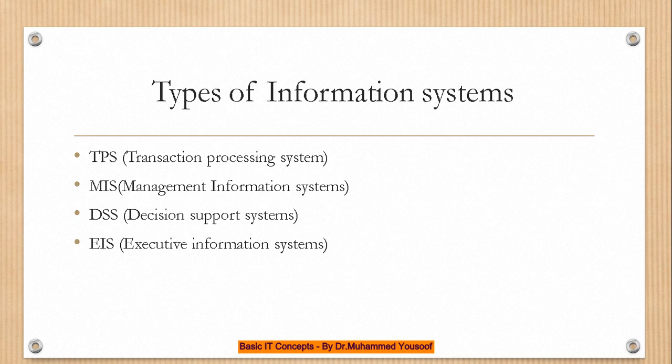Now that we know what an information system is and its components, let's discuss the types of information systems. There are different hierarchy levels in the management of any organization, and depending on the level, different types of information systems are used. There are four types: Transaction Processing System (TPS), Management Information System (MIS), Decision Support System (DSS), and Executive Information System (EIS). Not everyone uses TPS or EIS — it depends on your level and job role in the organization.